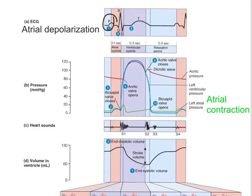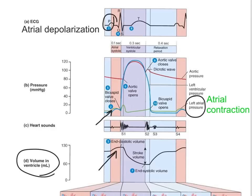As the atria contracts, the atrial pressure would increase, and that is exactly what you can see here. So as the heart is depolarized, it will contract. The atria contracting is going to force the last bit of blood in the atria into the ventricle. Remembering that it was already passively filling, so 80% of the blood is already in the ventricle. This last bit, known as the atrial kick, puts the last 20% into the ventricle, so the ventricular volume increases.